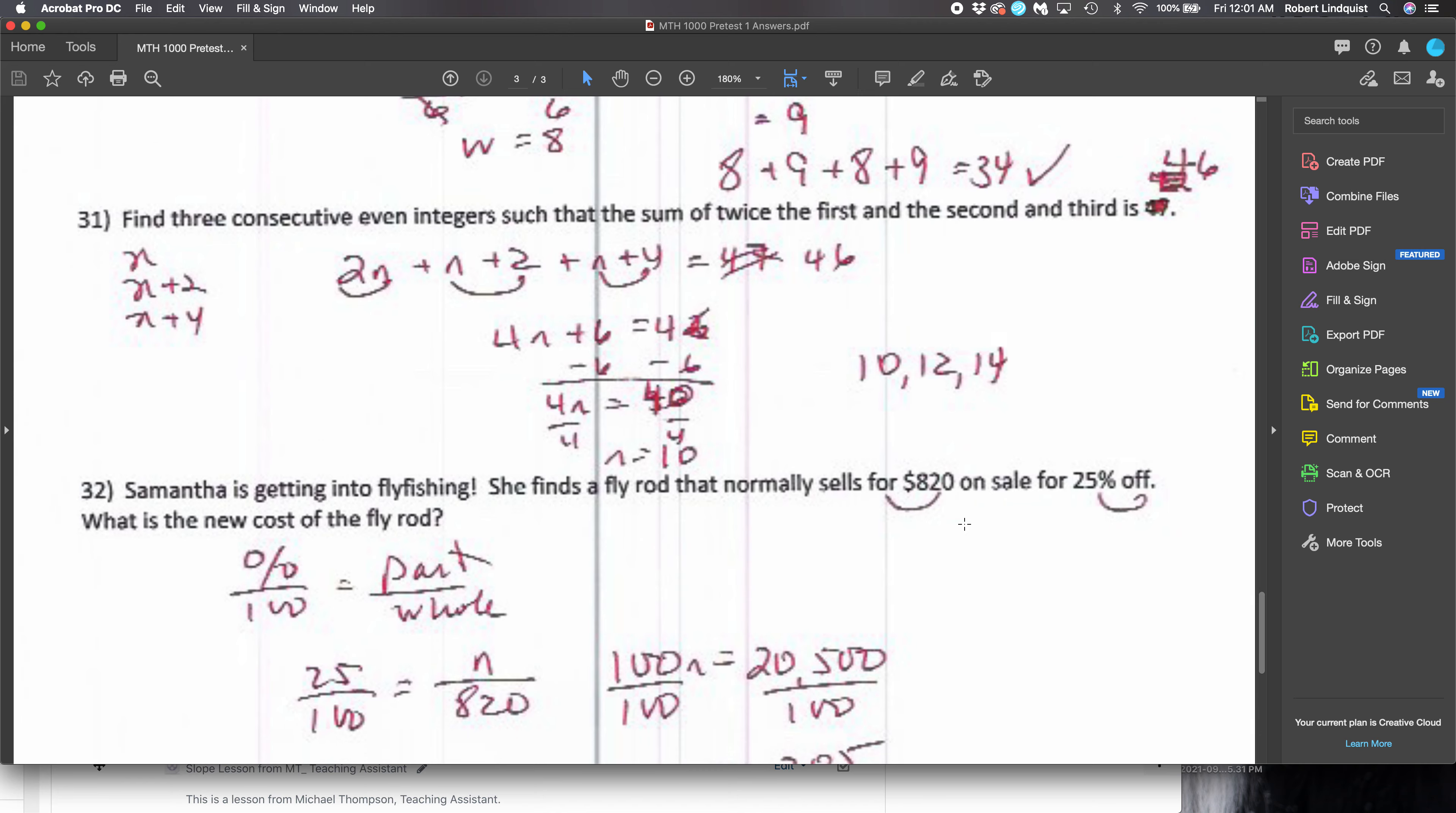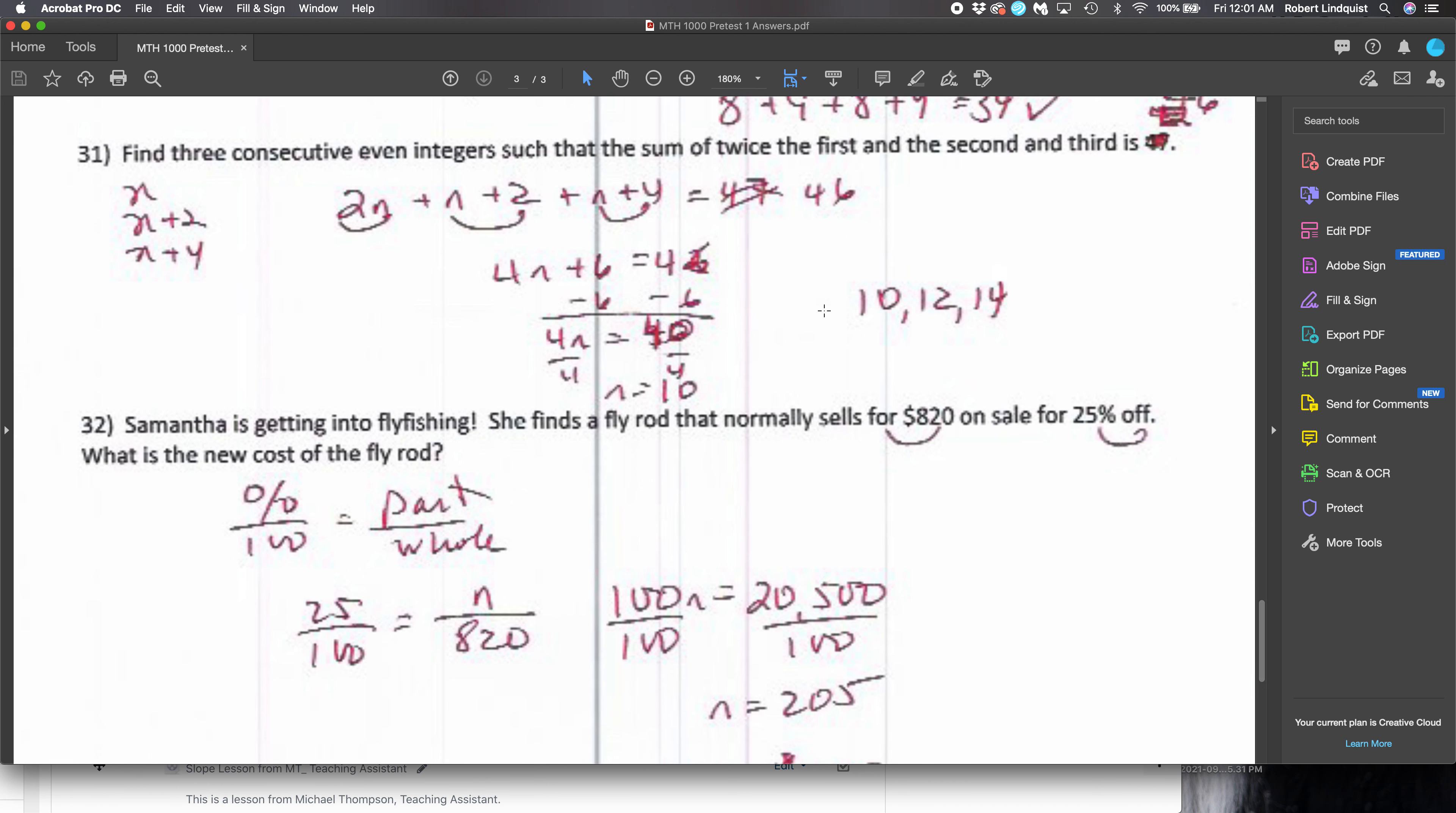Three consecutive integers such that the sum of twice the first - so here are my three integers: n, n plus 2, n plus 4. But twice the first is 2n, the second, the third. So here's the second guy, n plus 2, here's the third guy, n plus 4. So if I add up all of those I get 46. I had originally had a mistake of 47 but I fixed it on the Moodle page and I fixed it here. Okay, so I come up with 10, 12, 14.